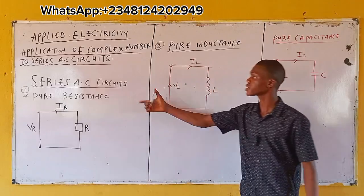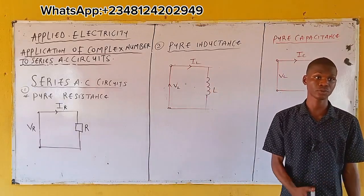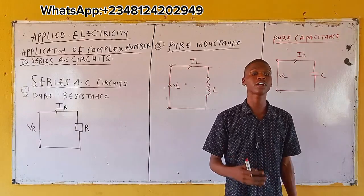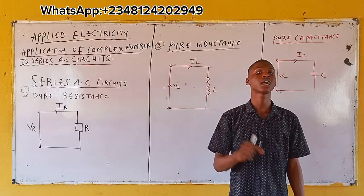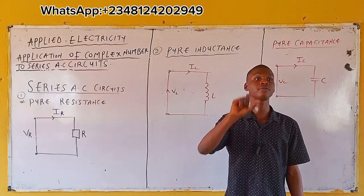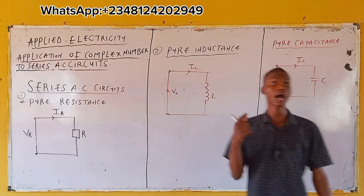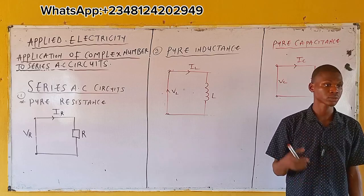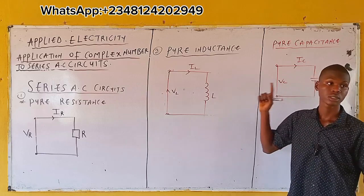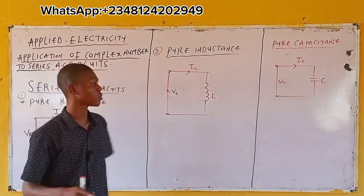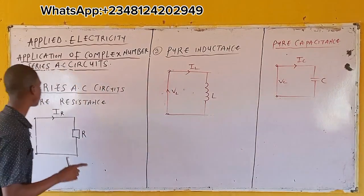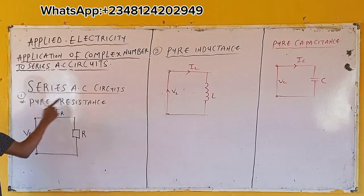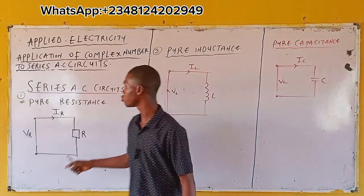For this series AC circuit, as far as the second case is concerned, you can have your resistor present alone, you can have your capacitor present alone, or likewise your inductor. Let's take them one by one. The first one: series AC circuit with pure resistance.